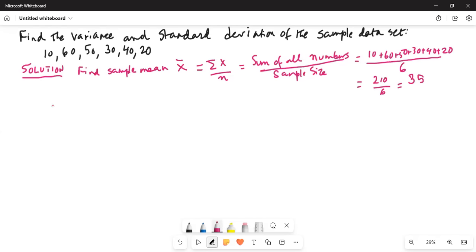So second is find the deviation of each number from the mean. Deviation means difference, which is x minus x̄. So let's make a column of x, the numbers. Then x̄, which is the sample mean. Then x minus x̄ and finally x minus x̄ square.